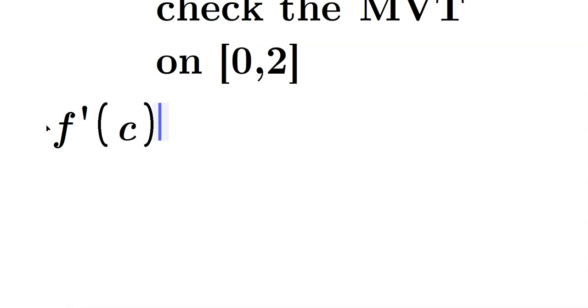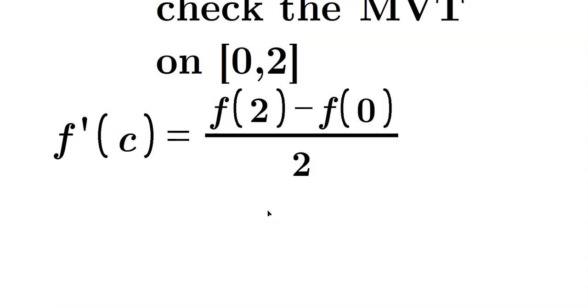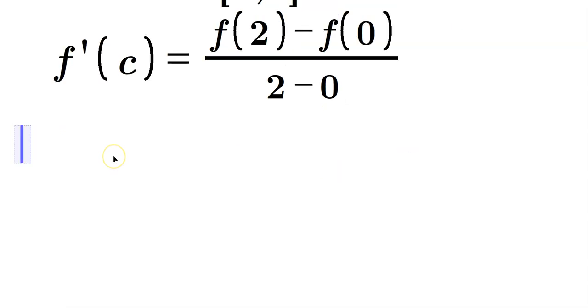say f prime of c will be equal to this: f of 2, right here, minus f of 0, divided by the change in x, which would be 2 minus 0. So let's apply this now.